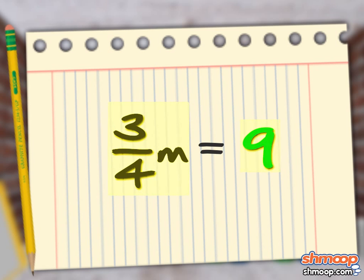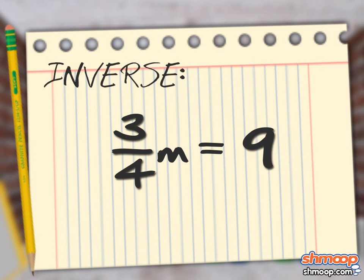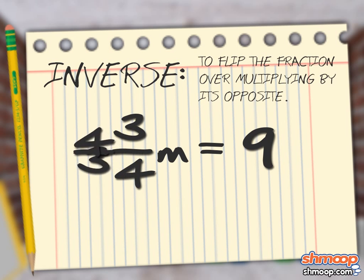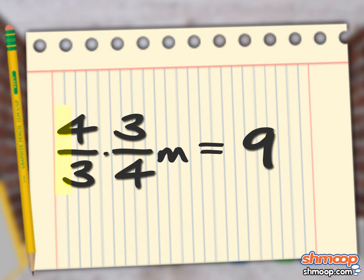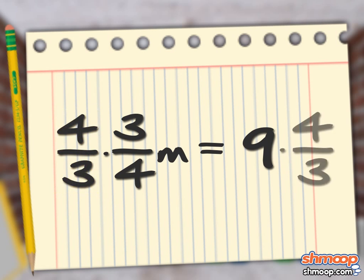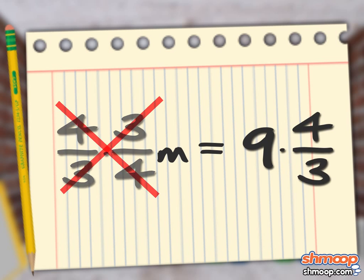In order to get rid of the fraction, we need to multiply each side by the inverse of the fraction. Inverse means to flip the fraction over, kind of like multiplying by its opposite. In this case, the multiplicative inverse would be four over three. So multiply both sides by four over three. That cancels out the three-fourths on the left, leaving us with M.